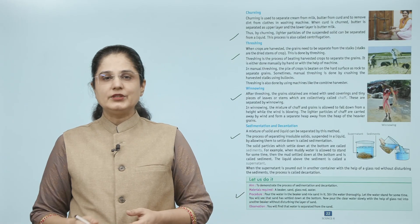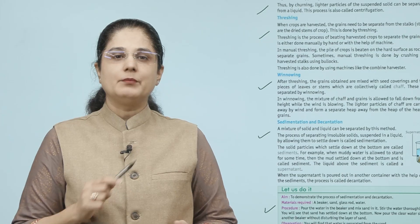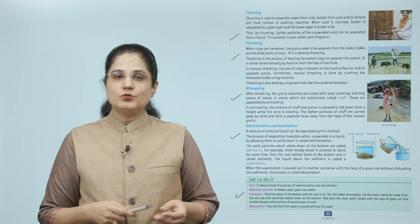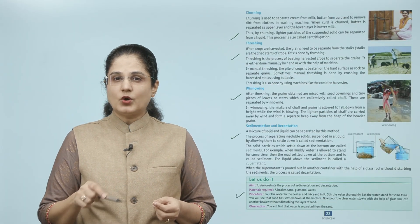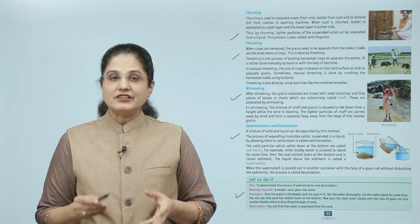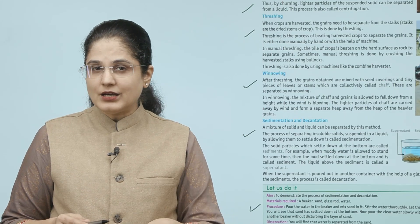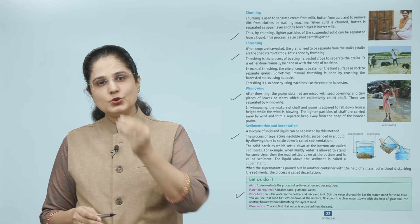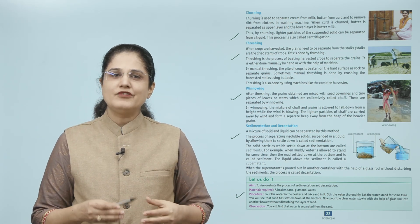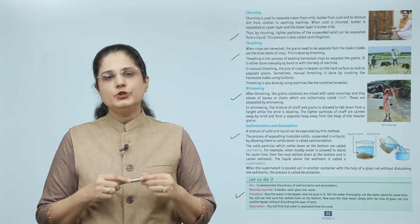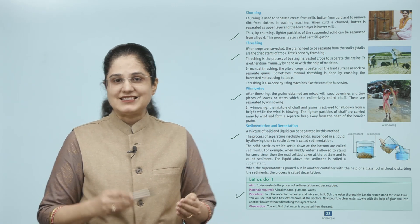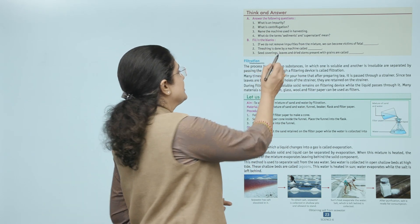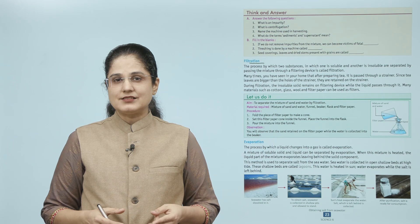Let us do it. Aim: to demonstrate the process of sedimentation and decantation. Materials required: a beaker, sand, glass rod, water. Procedure: pour water in the beaker and mix sand in it; stir thoroughly; let the water stand for some time — you will see that sand has settled at the bottom. Now pour the clear water slowly with the help of a glass rod into another beaker without disturbing the sand layer.